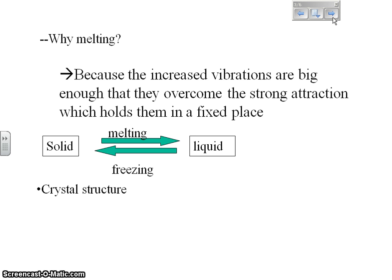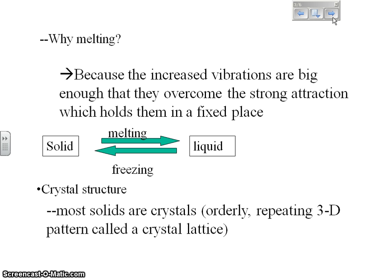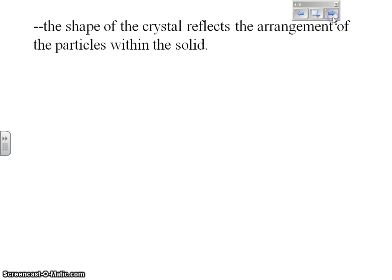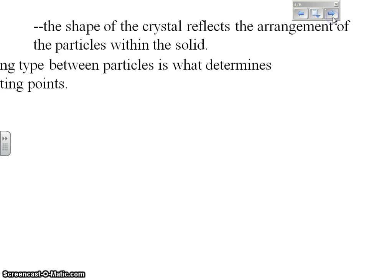Solids are made up of crystals. They have a crystalline structure. It is a 3D repeating pattern called a crystal lattice. Not all solids are crystals, but most of them are. The shape of the crystal reflects the arrangement of the particles within the solid.